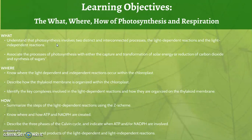Photosynthesis is essentially a series of oxidation and reduction reactions. Just a reminder: oxidation is the loss of electrons — LEO, loss of electrons is oxidation. GER, gain of electrons is reduction. So essentially, we're looking at a series of oxidation and reduction reactions.